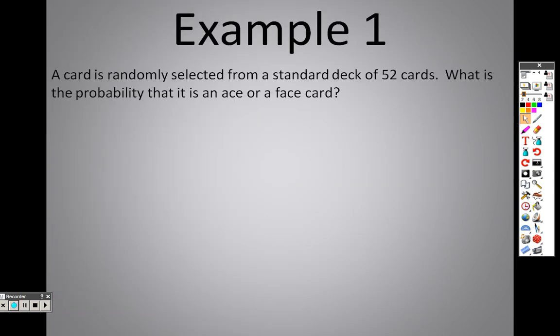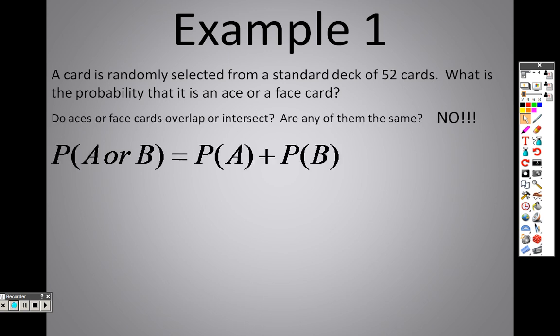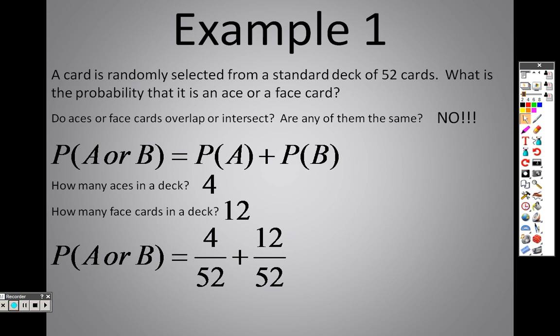So example 1, a card is randomly selected from a standard deck of 52 cards. What's the probability that it's an ace or a face card? Literally, look at this as two problems. Just look at the first item. What's the probability that it's an ace? 4 out of 52. What's the probability that it's a face card? 12 out of 52. So I set it up as 4 over 52 plus 12 over 52. Are there any aces that are face cards?